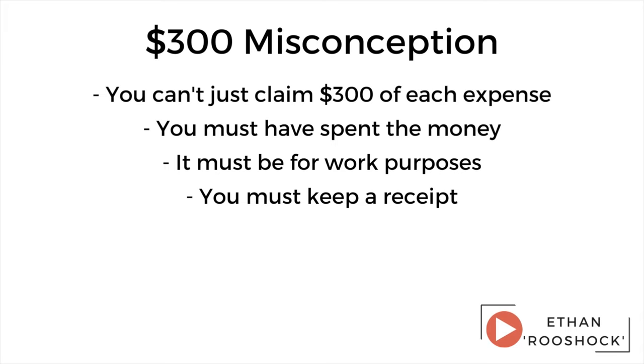Deductions are a major area the ATO focuses on, and it's easier for them to pick up mistakes because they can compare you against someone in the same industry and occupation. You need to understand what's applicable for your occupation, but also you need to have actually spent the money. People think they can just claim the maximum — for example, $300 for tools, $300 for uniforms, $300 for donations — but this isn't true. If you get audited, the ATO will want to see your $300 receipt for each item. Keeping receipts throughout the year is the simplest way to make sure you get your deductions right.